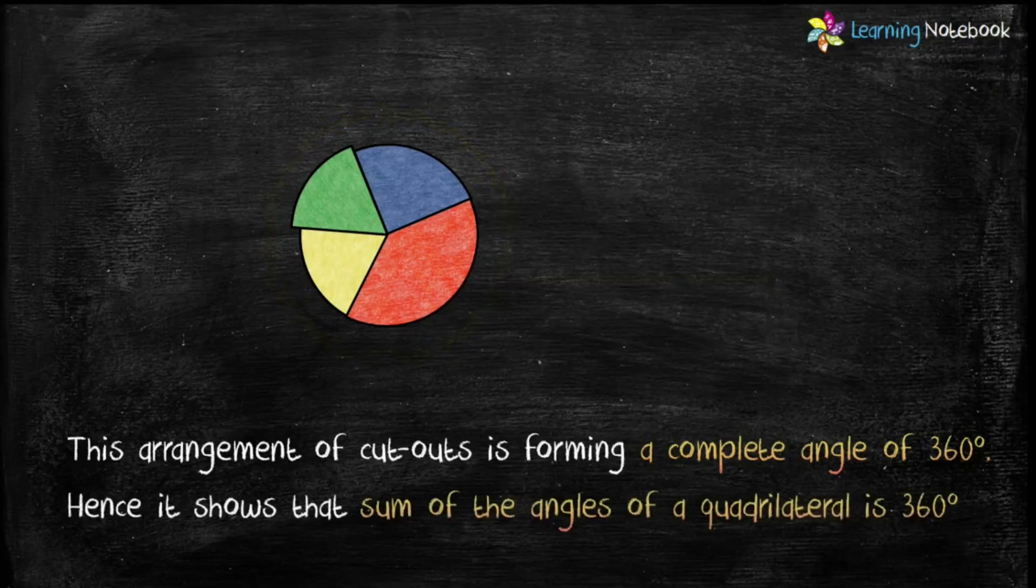Hence, it shows that the sum of the angles of a quadrilateral is 360 degrees.